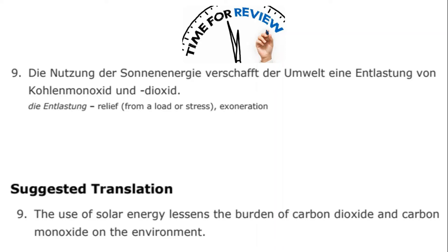We can note that 'der Umwelt' comes before the direct object in the German word order, even though in English we'd say 'lessens the burden on the environment.' This is possible because 'der Umwelt' is in the dative case — it's the recipient of the reduction in burden. Although 'der Umwelt' looks like masculine nominative singular, 'Umwelt' is actually feminine — it's 'die Umwelt' in the nominative — so 'der' here represents the dative feminine form, as seen in the last two rows of the feminine column.